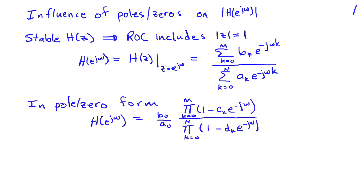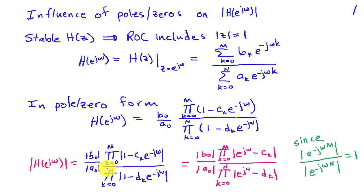It's useful to rewrite this in pole-zero form, as we have done previously. We'll write H(e^{jω}) as b_0 over a_0, factoring out the coefficients of the constant term in the numerator and denominator, and then we'll be left with a product of terms that have zeros and poles in them. So we'll have the product from k equals zero to M of (1 minus c_k e^{-jω}), and from k equals zero to N of (1 minus d_k e^{-jω}). Taking the magnitude, the magnitude of a product is just the product of the magnitudes, so I can write this as |b_0/a_0| times the product of |1 minus c_k e^{-jω}| over the product of |1 minus d_k e^{-jω}|.